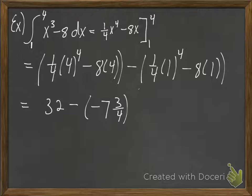So we have minus a negative, means we're really adding that. So we end up with 39 and 3 fourths.